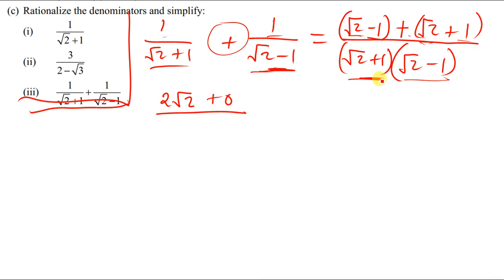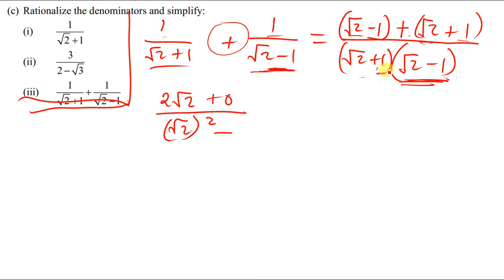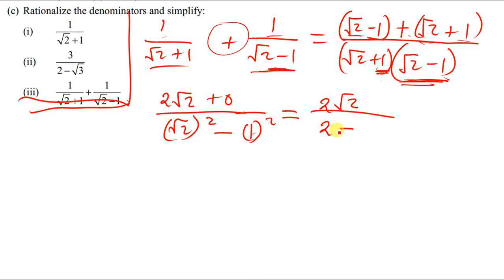For the denominator, I'll use the difference of two squares method: root 2 squared minus 1 squared gives 2 minus 1, which equals 1. So we have 2 root 2 over 1, and the final answer is 2 root 2.